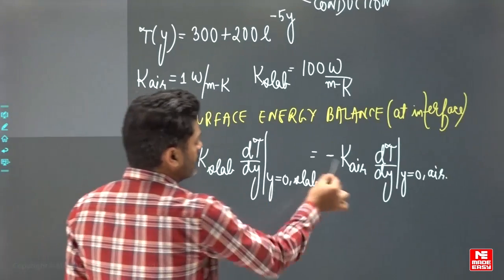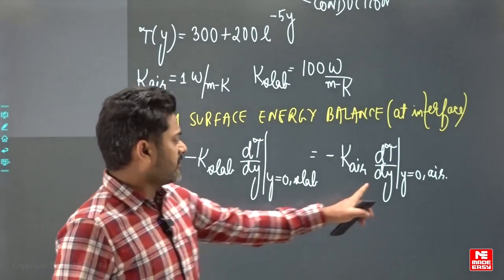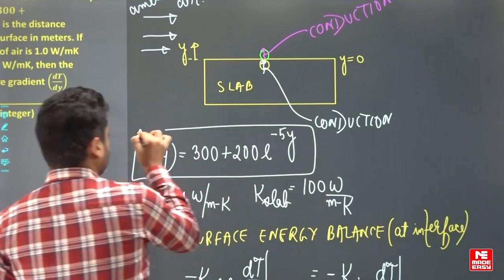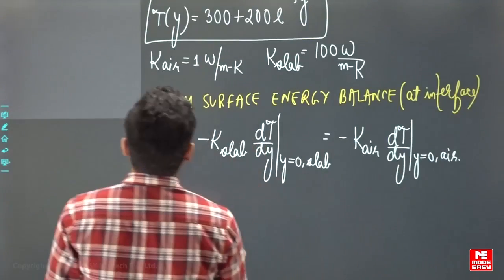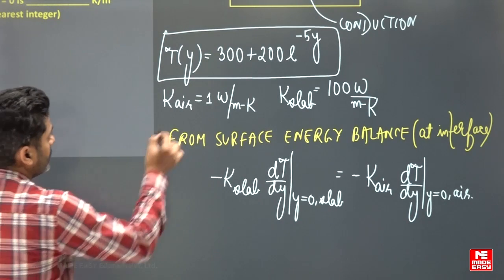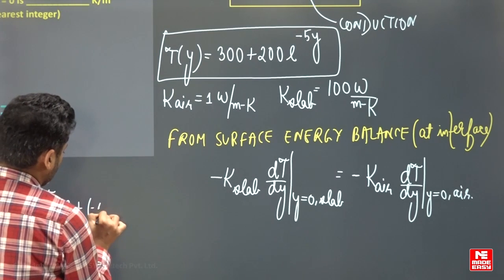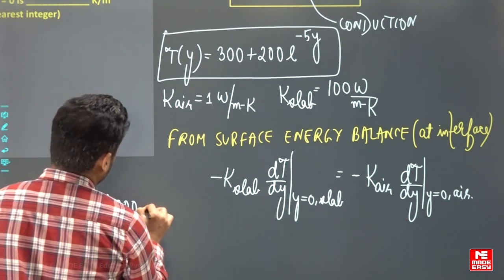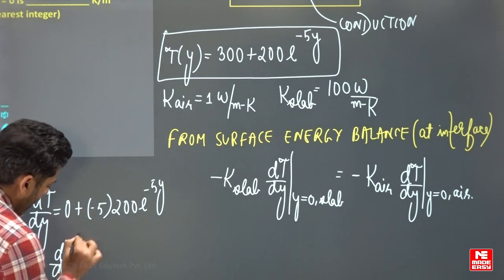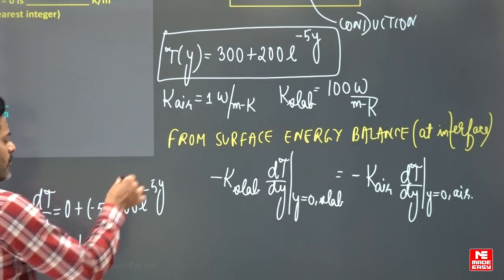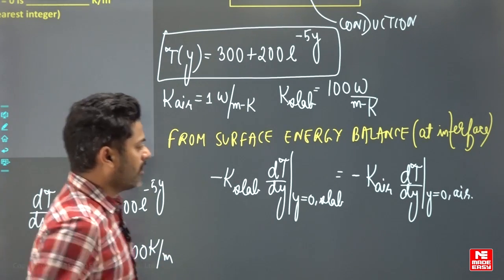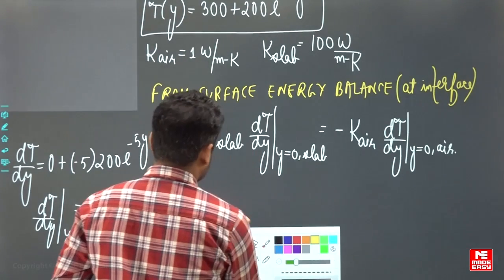The conductivity is known for both cases, but the gradient in the slab is unknown. However, the temperature profile of air is given, so we can compute dT/dy from it. Differentiating T equals 300 plus 200 e^(minus 5y), we get dT/dy equals minus 5 times 200 times e^(minus 5y). At y equals zero, this gives dT/dy equals minus 1000 Kelvin per meter.